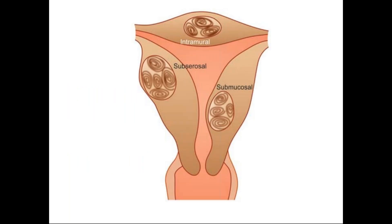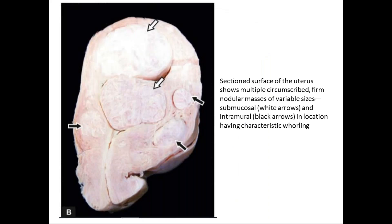This picture is from Harshamohan, showing three types of leiomyomas: intramural, submucosal, and subserosal. Subserosal tumors give a bossellated appearance to the external surface of the uterus. The cut section of the uterus shows multiple circumscribed firm nodular masses of variable sizes. White arrows indicate submucosal leiomyomas and black arrows indicate intramural leiomyomas. Note the characteristic whorled appearance of the cut surface.